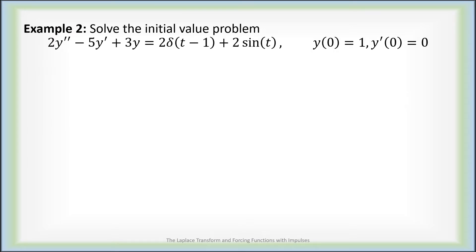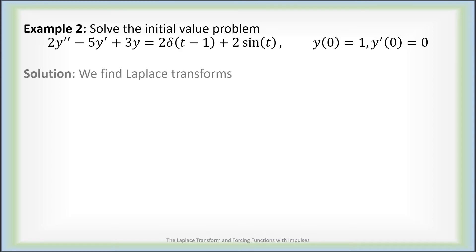As a second example, let's solve this initial value problem: 2y double prime minus 5y prime plus 3y equals 2 times an impulse function at 1 plus 2 times the sine of t, with initial values y of 0 is 1 and y prime of 0 is 0.